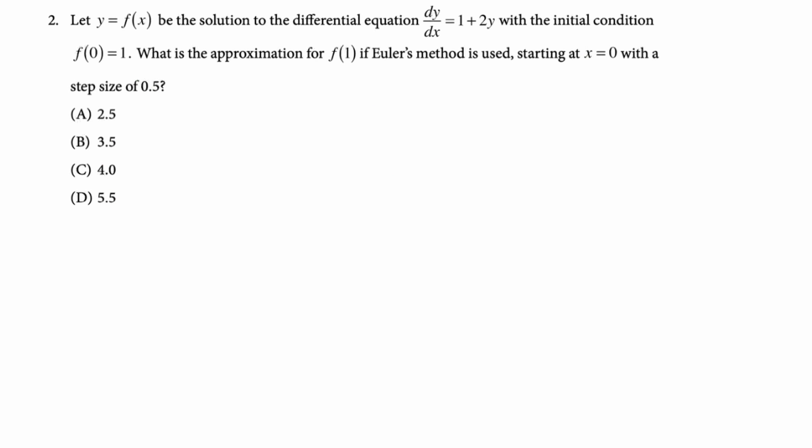Number two, let y equal f of x be the solution to the differential equation dy dx equals 1 plus 2y with the initial condition f of 0 equals 1. What is the approximation for f of 1 if Euler's method is used starting at x equals 0 with a step size of 0.5? Okay so Euler's method, we're going to use a table every time. Let's set up our table.